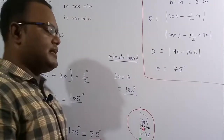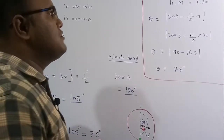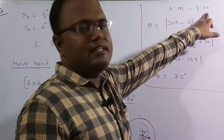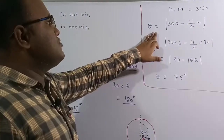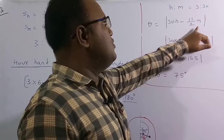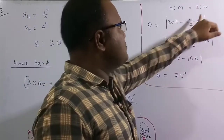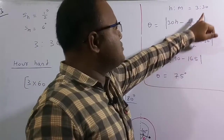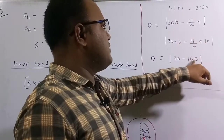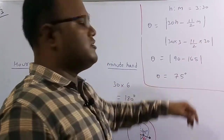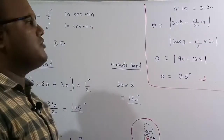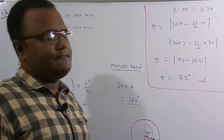Alternatively, using the direct formula: θ = |30H − (11/2)M|, where H = 3 and M = 30. So θ = |30×3 − (11/2)×30| = |90 − 165| = 75 degrees. Either method gives 75 degrees as the correct answer.